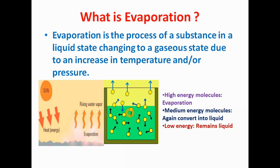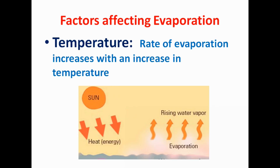Now I will explain which are the factors which affect Evaporation. The first factor which affects Evaporation is Temperature. Evaporation is directly proportional to temperature. That means if the temperature is higher, then the rate of Evaporation is also higher. If temperature is low, then the rate of Evaporation will be low. We can see that in hot summer the rate of Evaporation is high due to high temperature, whereas in winter season the temperature is low, so the Evaporation rate is low.